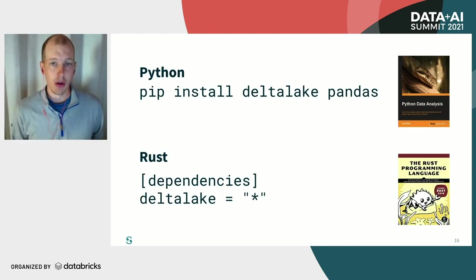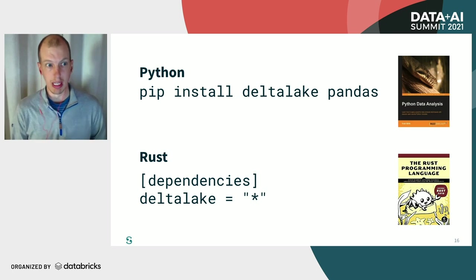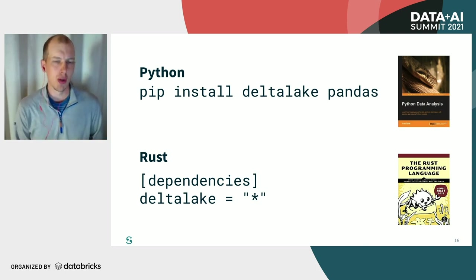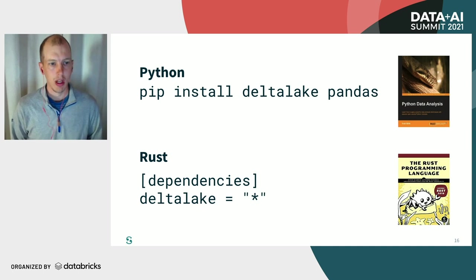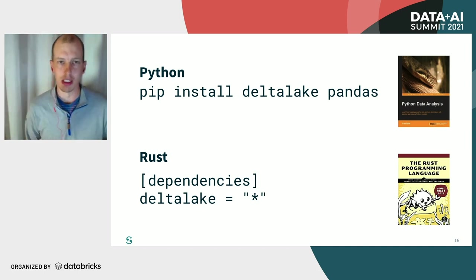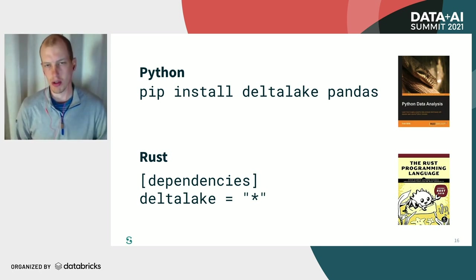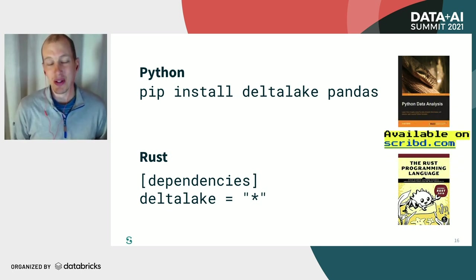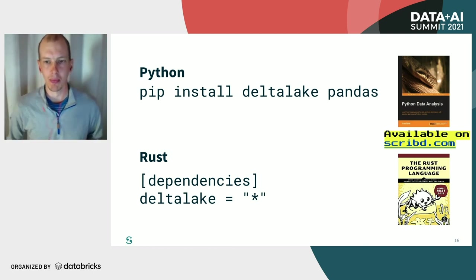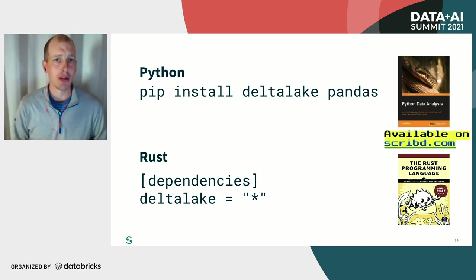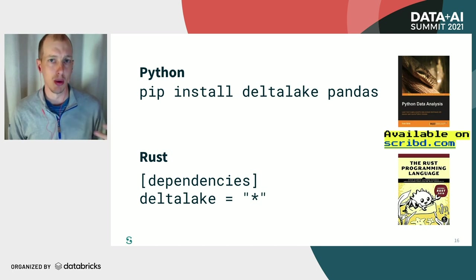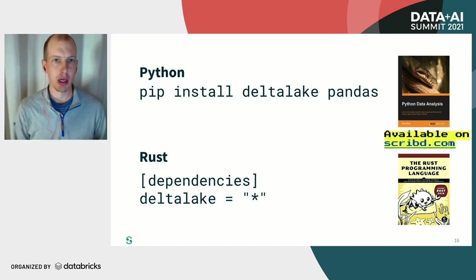So all of that said, Delta RS is there and it's ready for you to start using. If you're in Python, just do a pip install delta-lake and pandas so you can work with the data. I'd also recommend the Python Data Analysis book, which gives a good introduction to using pandas. If you're using Rust, you can add the delta-lake dependency to your Cargo.toml, and of course I'd highly recommend the Rust book. Both of these titles are also available on Scribd.com — and if you dig around, you'll find a lot of interesting academic papers around Delta Lake, data analysis, and data processing.